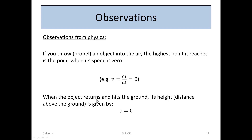Also, when an object returns and hits the ground, its height or distance above the ground is given by distance = 0. This might seem unnecessary to remember, but it's a useful condition: s = 0 when it has hit the ground, because we can then find out the time at which it hit the ground.